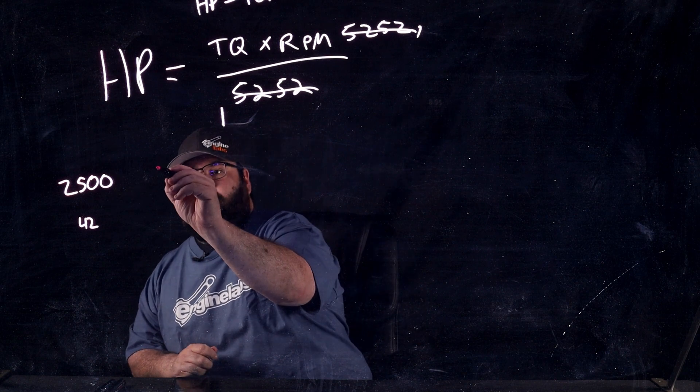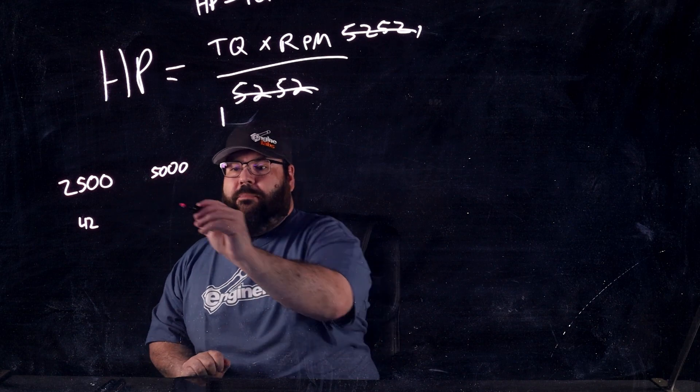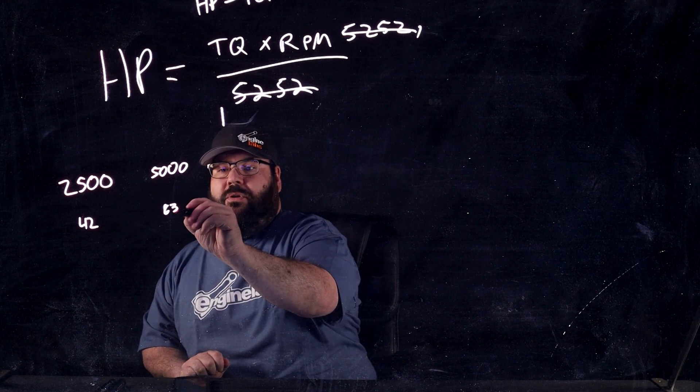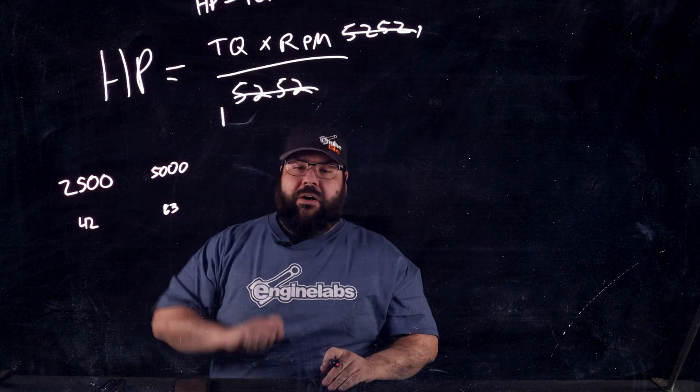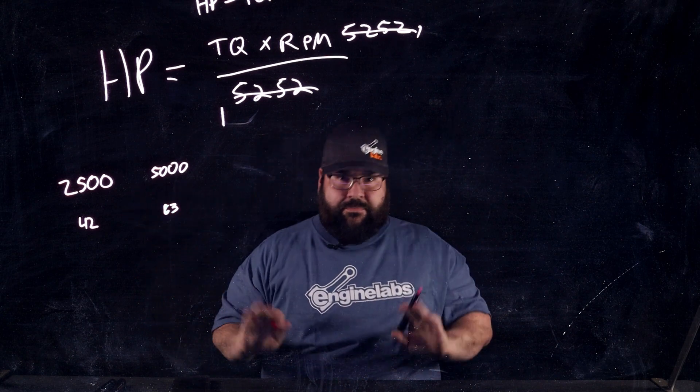Now, at 5000 RPM, obviously, you've doubled the RPM. So, you've doubled the number of time impulses per second. Not quite exact, but that's close.